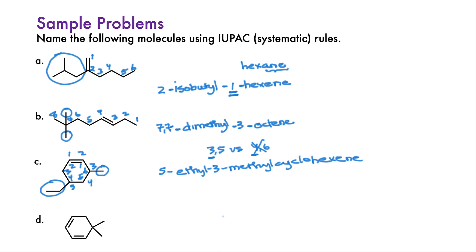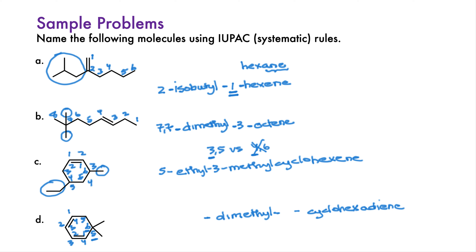The last example is a dimethyl-cyclohexadiene. The -ane ending of cyclohexane is changed to -adiene. Leave spaces before the parent for numbering the double bonds. In considering numbering, you first want to give the double bonds the lowest possible numbers — in both directions, this is 1 and 3. But where should the methyls go? If you number starting from the top, the methyls end up at the 5-5 positions. If you number from the bottom, you get them at the 6-6 positions. You would pick the lowest numbers, so this is 5,5-dimethyl-1,3-cyclohexadiene.